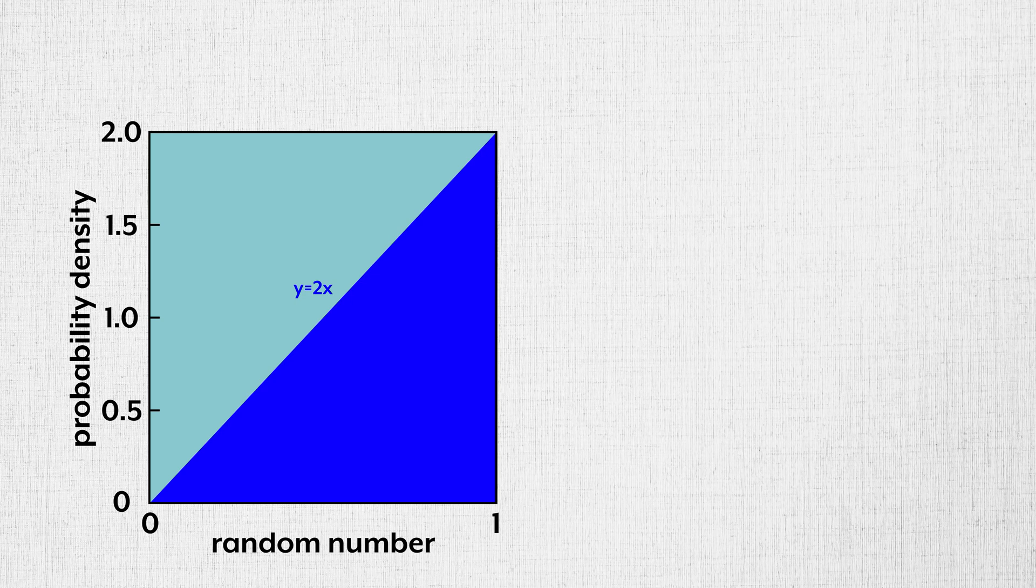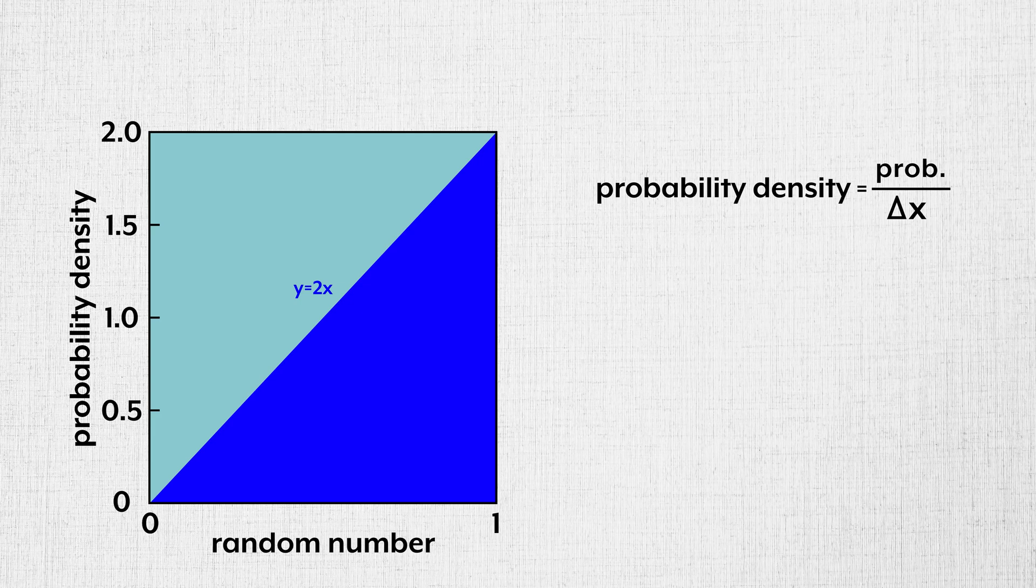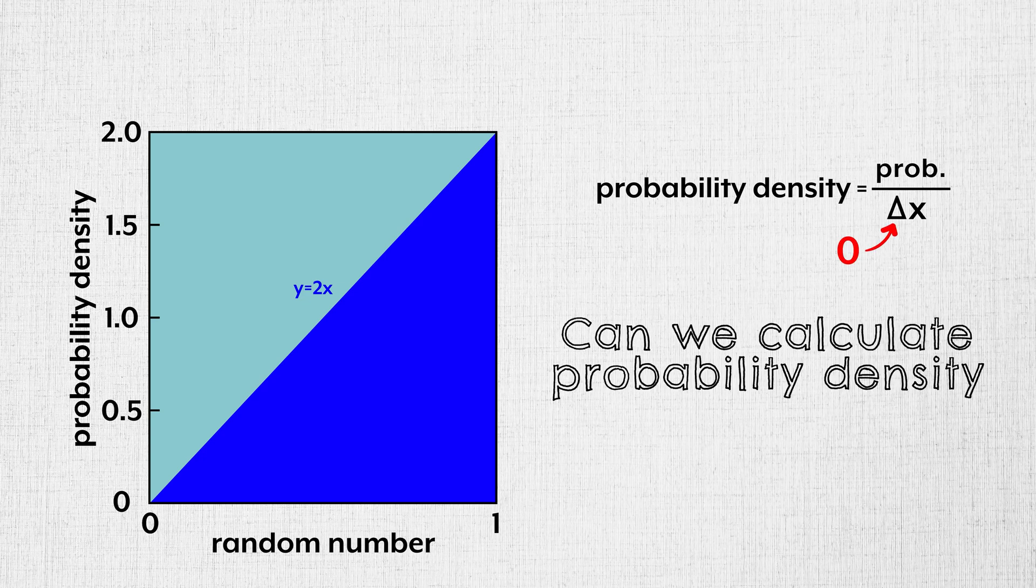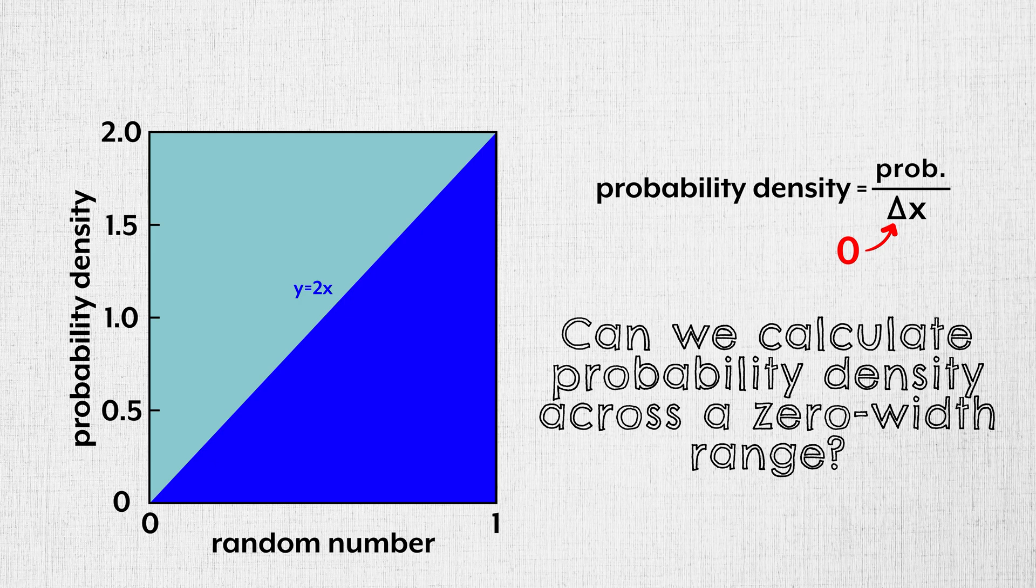As a reminder, probability density was defined as the probability of an occurrence in a range divided by the width of that range. But for continuous variables, the width of each range is 0. Can we calculate probability densities across a 0 width range? Or is that akin to dividing by 0?